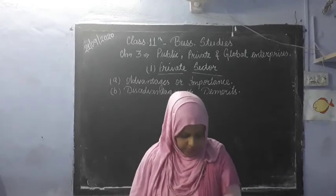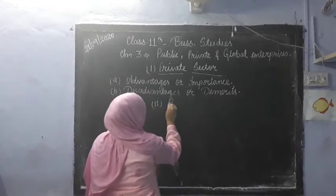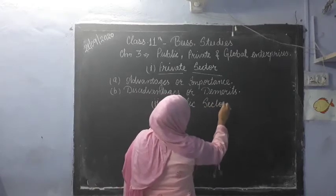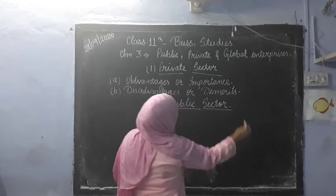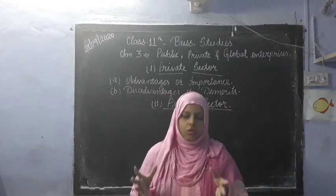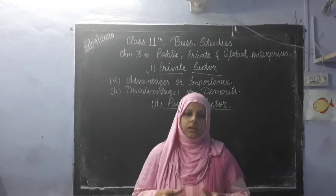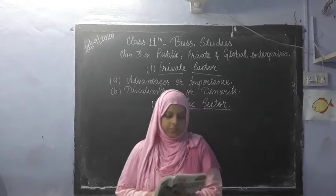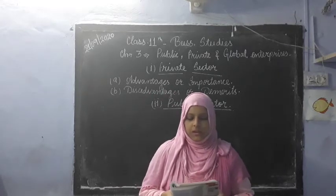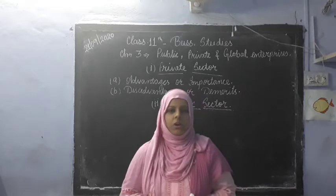The second one is the public sector. Private sector has individual form or joint stock form. Public sector — also called state sector or government sector — is that organization or institution which is owned, managed and controlled by the government: state government or central government.